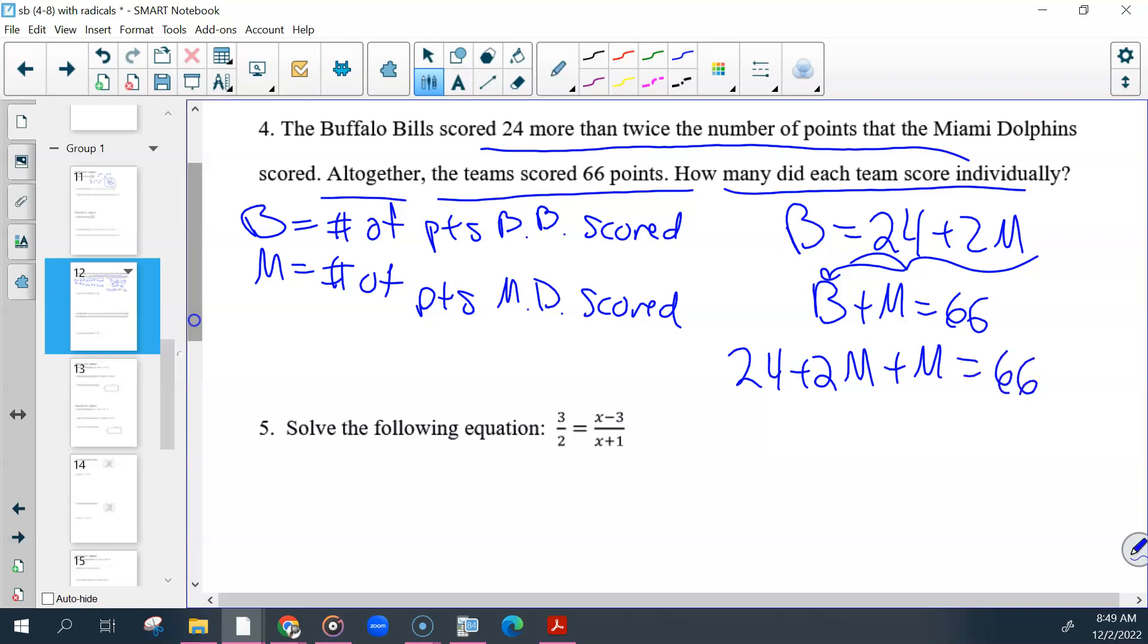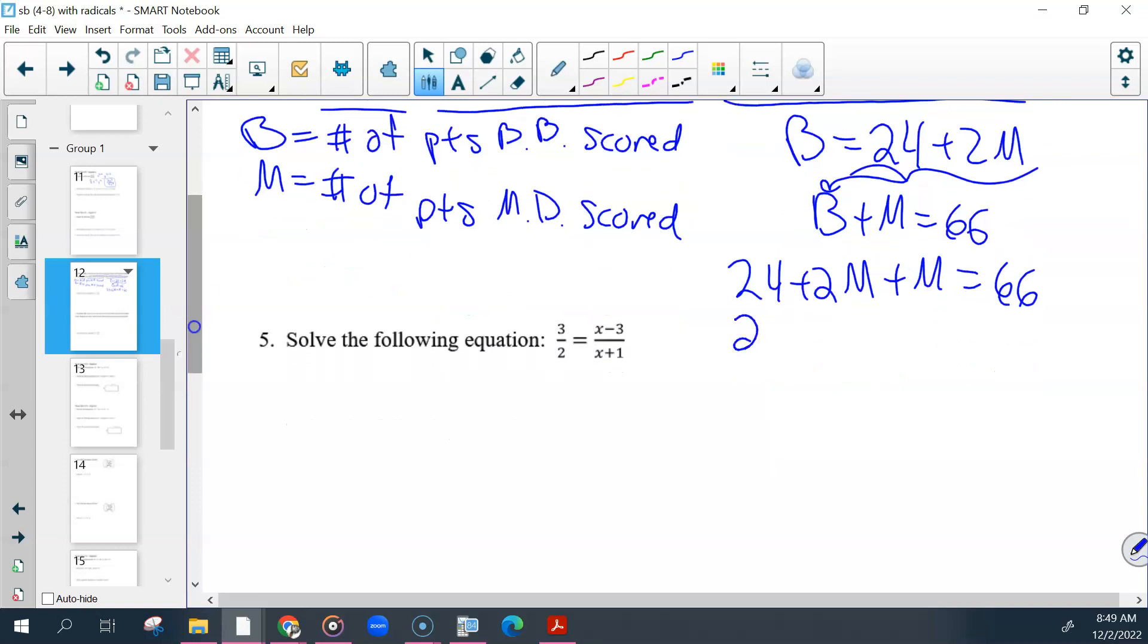Altogether, if I added B and M I would get 66. So I'm going to take this equation and put it in for B: 24 plus 2M plus M equals 66. And then solve. So 24 plus 3M equals 66. Get rid of your 24 by subtracting, and then divide.